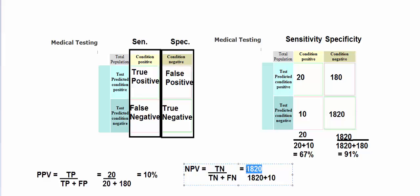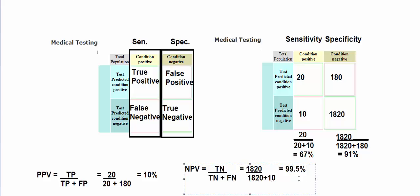That comes out to about 99.5%. So that's a very good NPV. If you're sitting in the patient room and your result comes back negative, the test is accurate in telling people that aren't sick 99.5% of the time. As in, 99.5% of the time if it comes back negative, you're fine. Whereas 10% of the time, if it comes back positive, you actually have the condition.